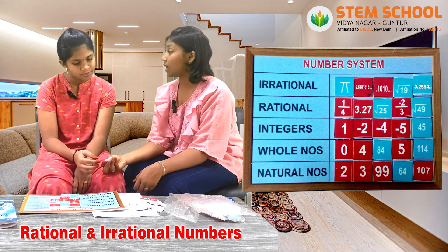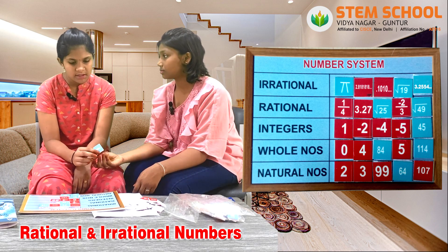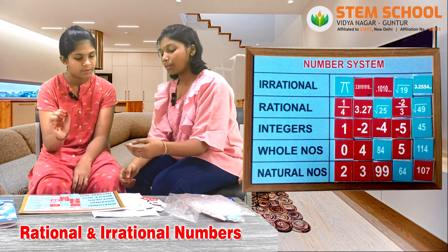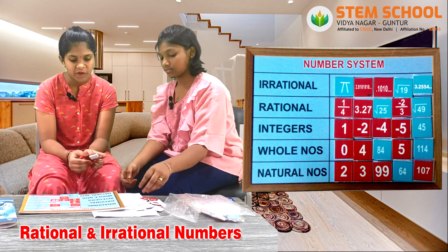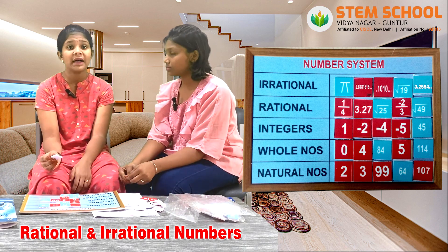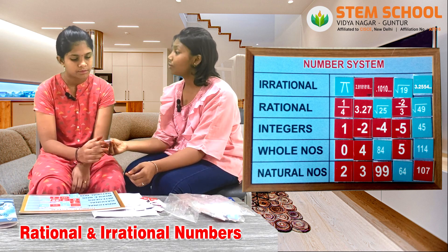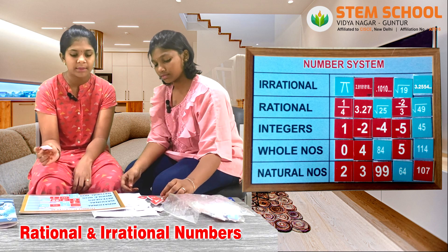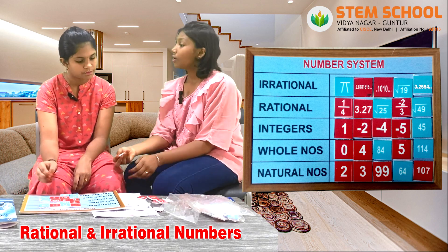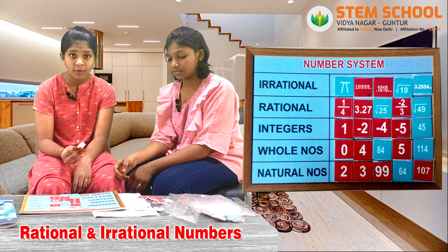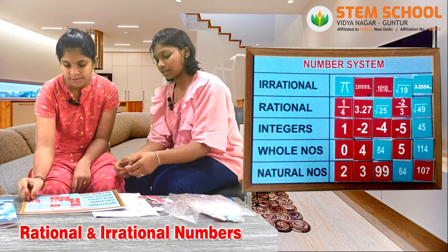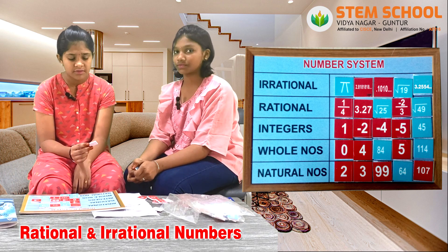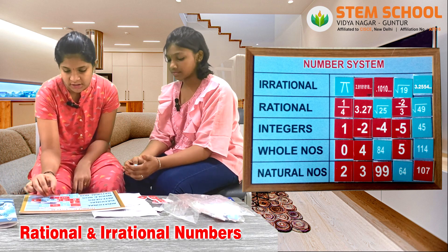What do you say about minus 1000? Minus 1000 is an integer. 1? 1 can be an integer, whole number and a natural number too. 1.14? 1.14 can also be an integer, whole number and a natural number. Minus 4? Minus 4 is of course an integer. Root 25? Root 25 is 5, so of course it is a rational number.